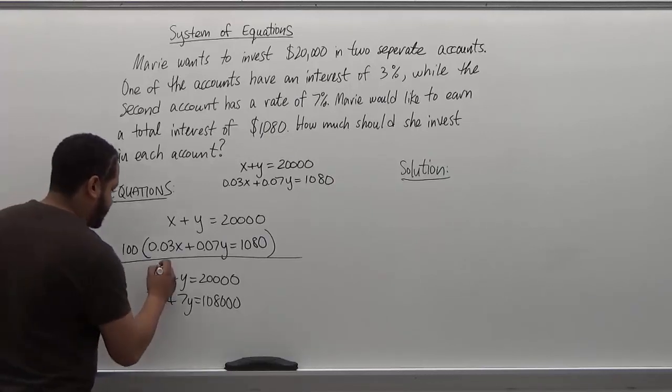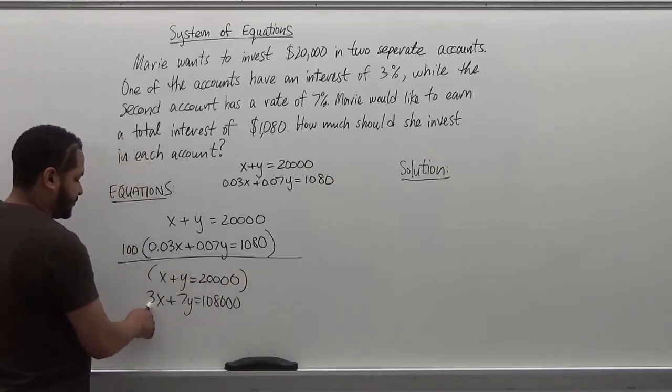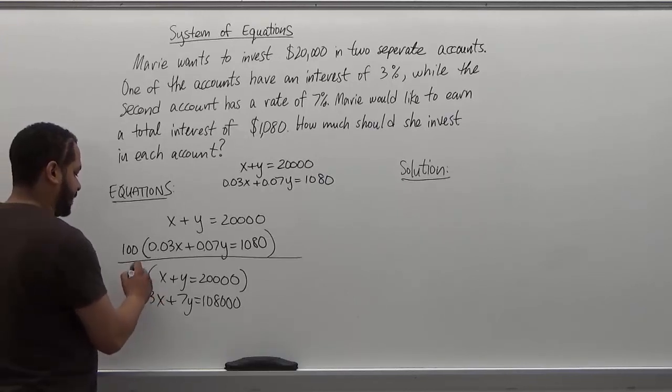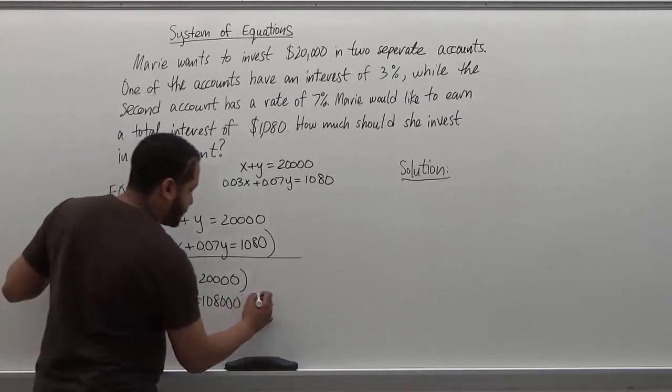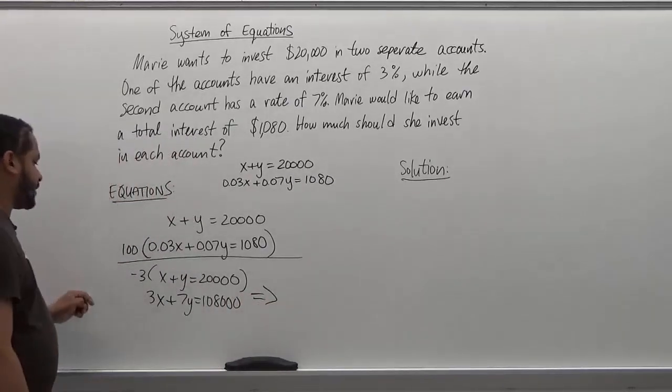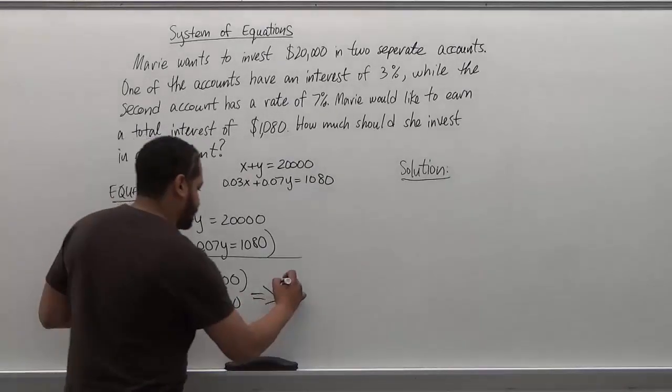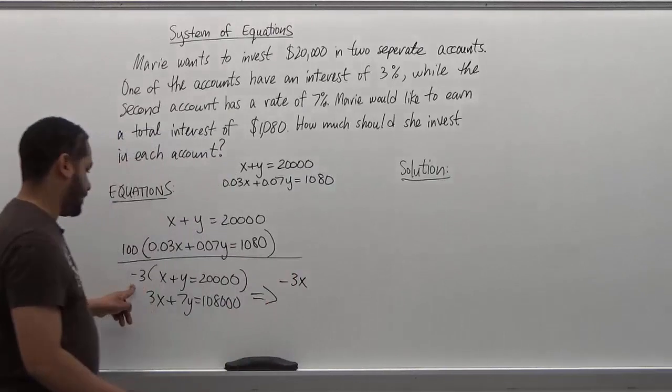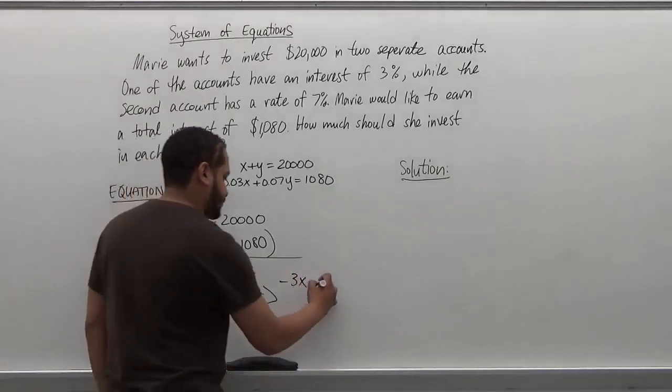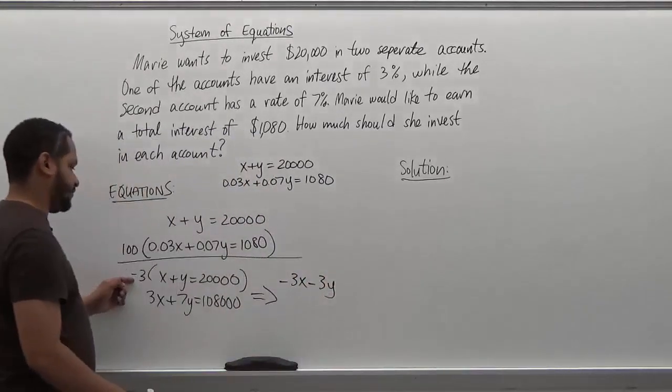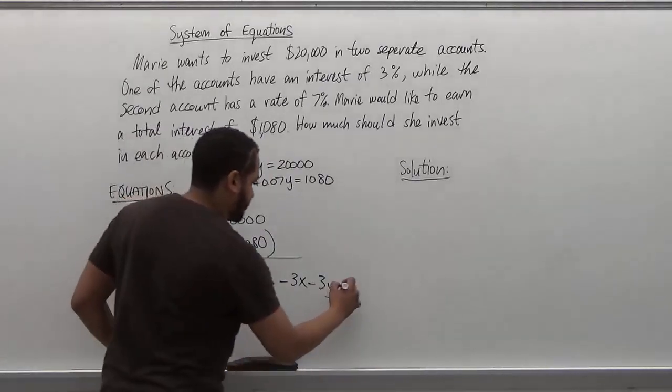So I'm going to multiply this top line by the opposite of this term of x. The x has a three, so I'm going to multiply up here by negative three so they can cancel out. So what's going to happen here is I'm going to get negative 3x, negative 3y, negative three times 20,000 is negative 60,000.